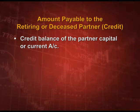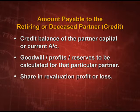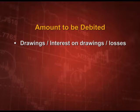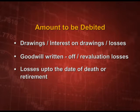First, whatever we have to give, we will credit in the partner's capital account - that is credit balance of the partner's capital or current account. Next, goodwill, profits, or reserves to be calculated for that particular partner, and the share in revaluation profit or loss, and the interest, profit, salary - whatever we have to give to that particular partner till the date of retirement or till the date of his death. The amounts to be debited to his account are drawings, interest on drawings and losses, goodwill written off, revaluation losses, or the losses up to the date of death or retirement. In this way we will be calculating the net amount payable to the retiring or deceased partner.